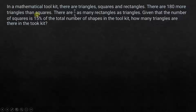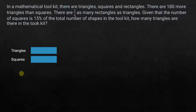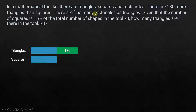There are three types of shapes. The first comparison is: there are 180 more triangles than squares, so our base is squares. Let's assume one box or one unit represents the number of squares. Since there are 180 more triangles than squares, the triangles will have the same amount as squares plus 180 more.